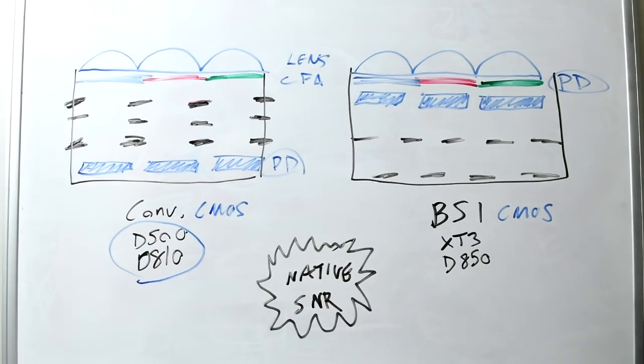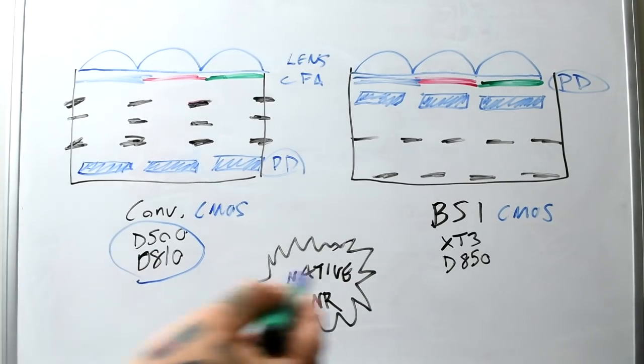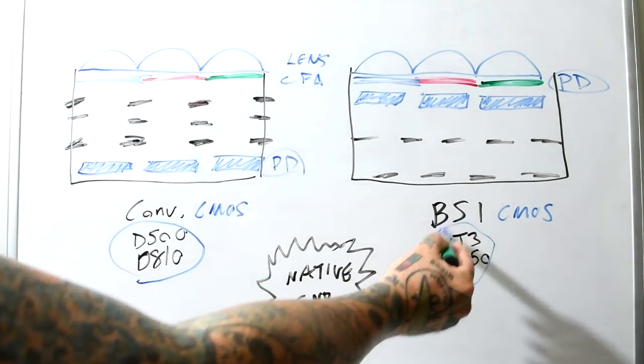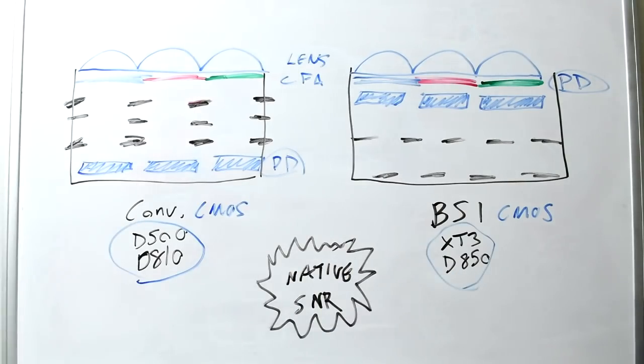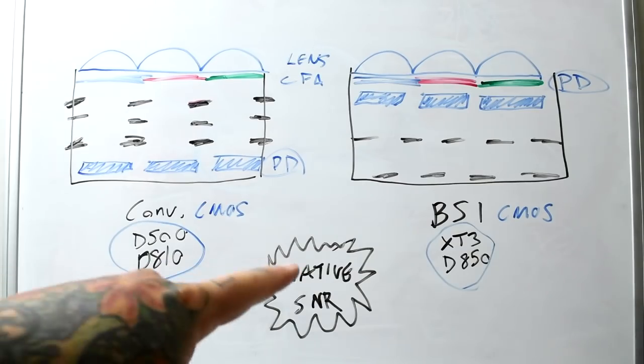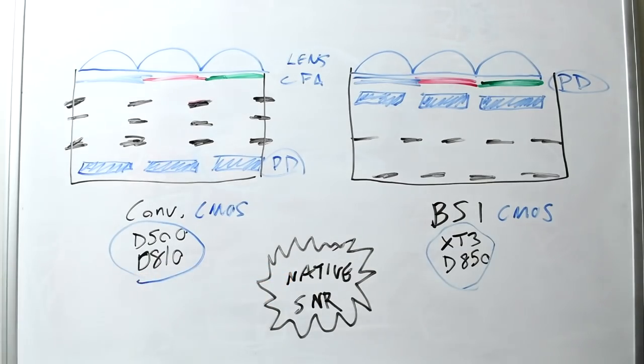On the right, we have backside illuminated sensor. For example, the new X-T3, which supposedly is a Samsung sensor used in the NX1. And also in the D850 and the new Nikon Z7 camera. What's really important is right down here. Let's talk about that in a second. So let's look at a conventional CMOS.